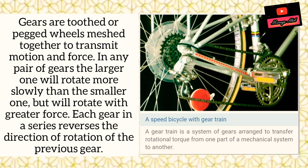These are the most advanced eco-friendly bicycles. Gears are toothed or packed wheels that mesh together to transmit motion and force. In any pair of gears, the larger one will rotate more slowly than the smaller one but will rotate with greater force. Each gear reverses the direction of rotation of the previous gear. A gear train is a system of gears arranged to transfer rotational torque from one part of a mechanical system to another.